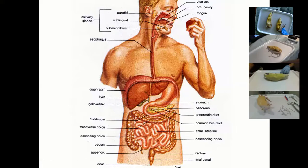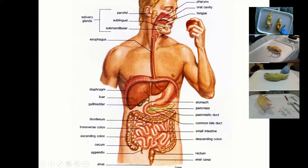The liver is an accessory organ to the digestive system — food doesn't go through the liver or the pancreas, that's why they're called accessory. But they do help with digestion. The liver produces bile, which helps us digest fat. In humans, the liver produces bile and then stores it in the gallbladder. Rats don't have a gallbladder, so don't look for it — bile goes directly from the liver into the small intestine. Then food goes through the small intestine, which is really long and super coiled inside.